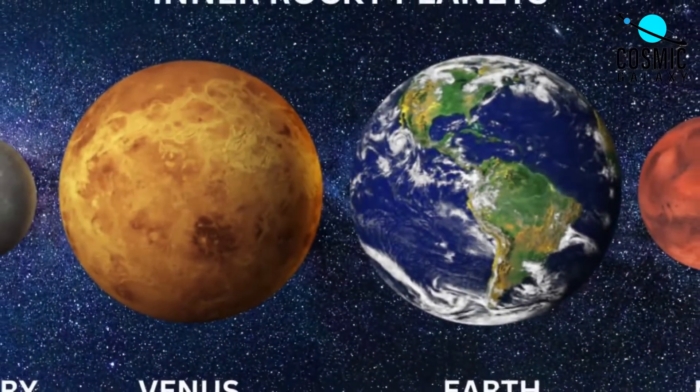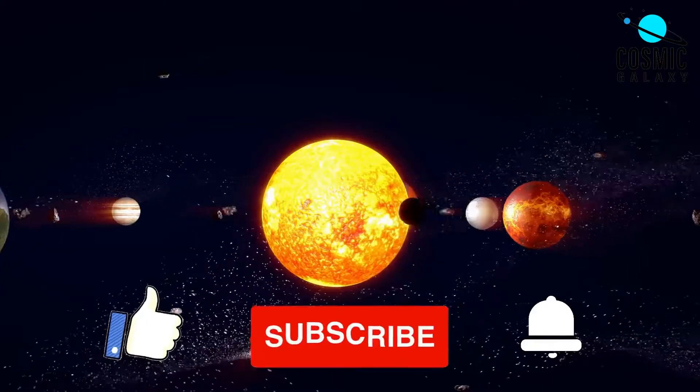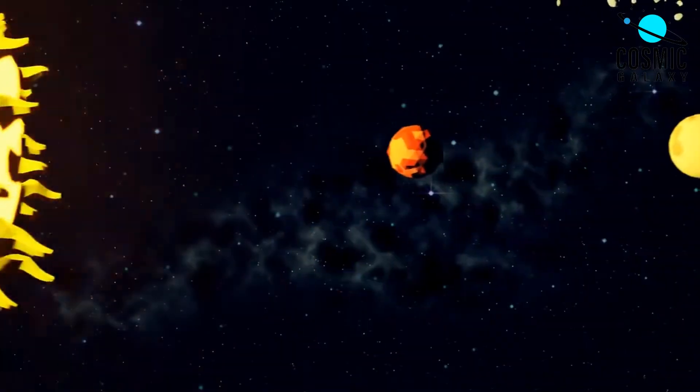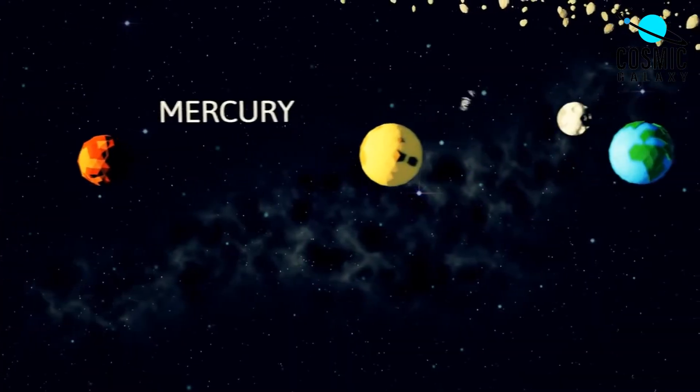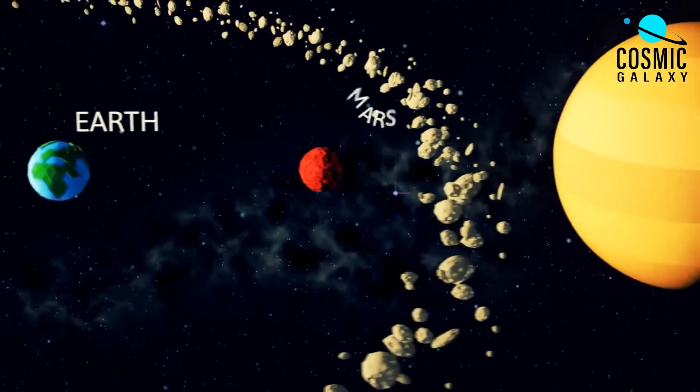Rocky planets, also known as terrestrial planets, are planets that are primarily composed of rock and metal. The four inner planets of our solar system, Mercury, Venus, Earth, and Mars, are all rocky planets.